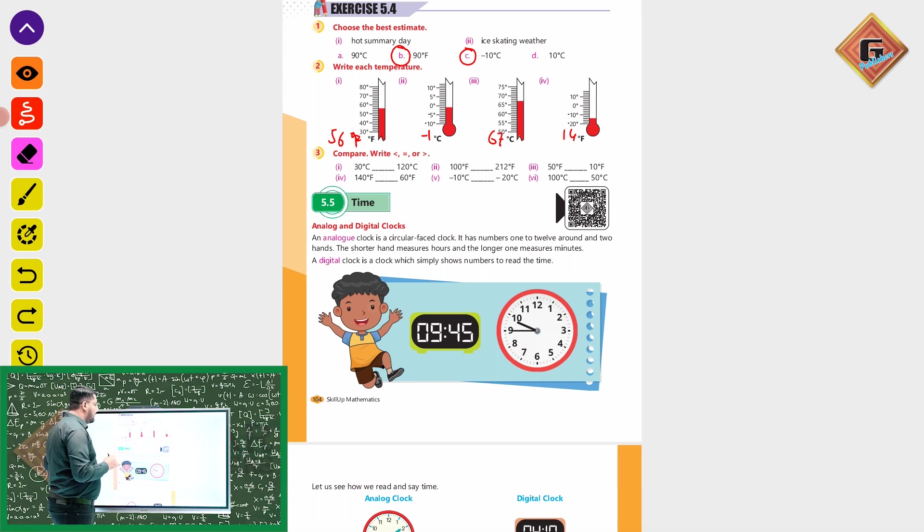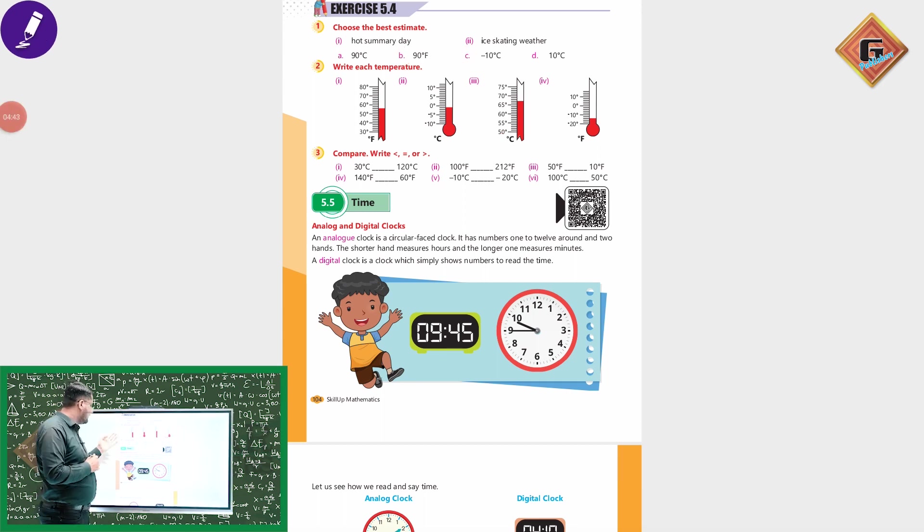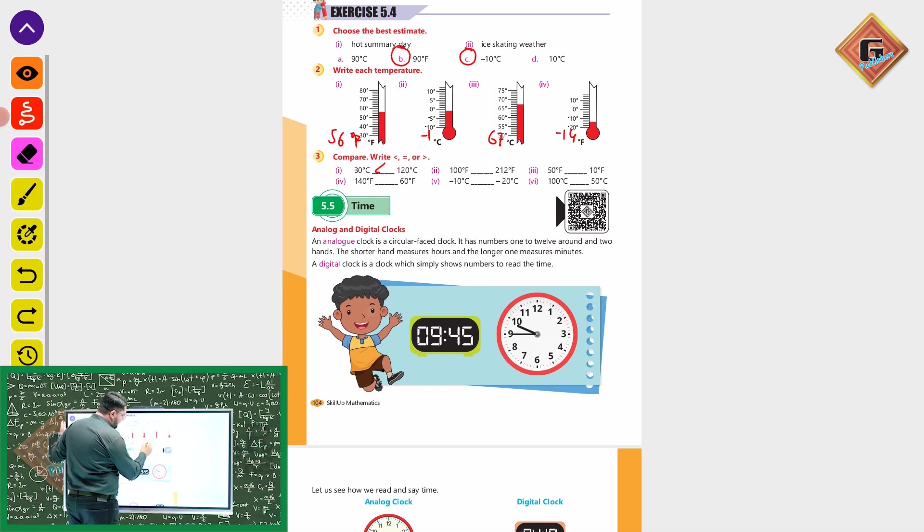Question 3: Compare - greater than, equal, less than. Compare. First part: Celsius, Celsius, 120. Celsius in 12, 50, 10, 50. Unit same.